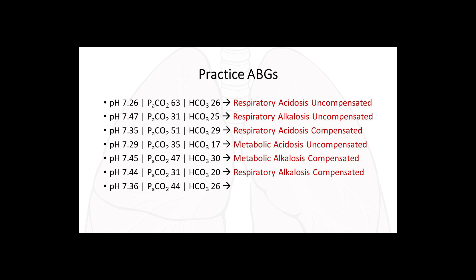Example seven: pH 7.36 — normal but on the acidic side. PaCO2 44 — normal (35–45). Bicarb 26 — normal, but on the high side of normal. All values are within normal range. The answer here is a normal ABG — a curveball.